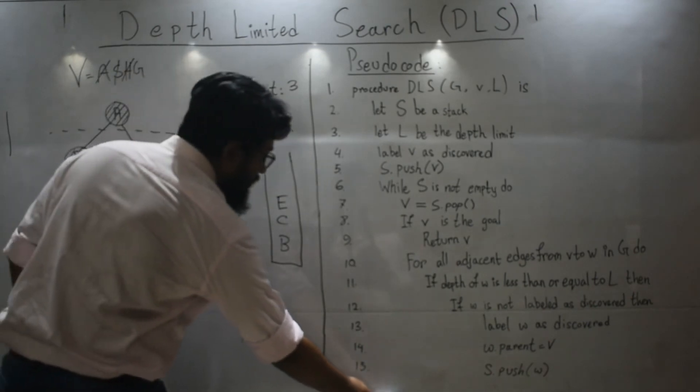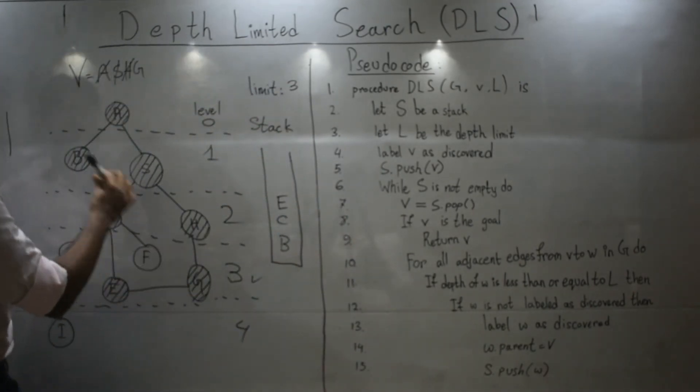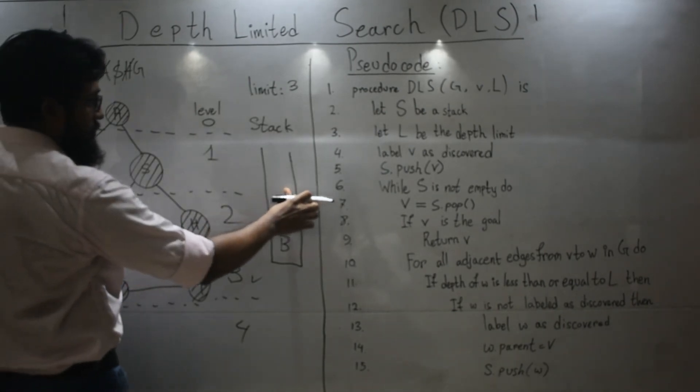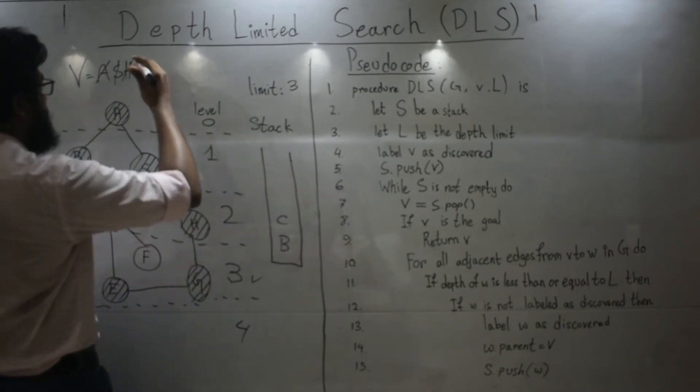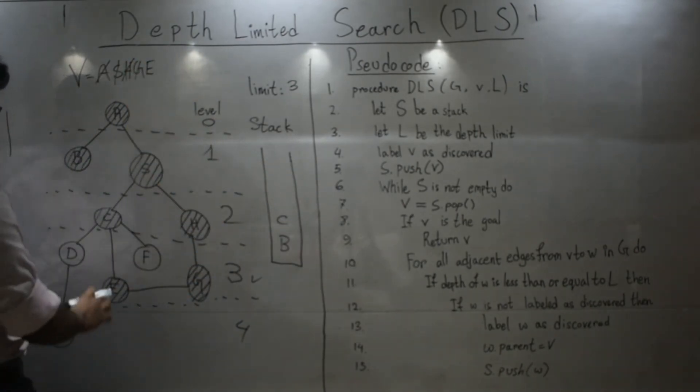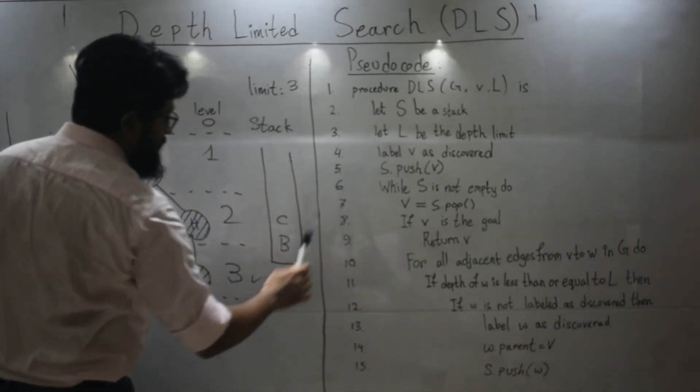And then, we will return to line 7. So now, we will pop E. Place it here. In case of E, all its neighbors have been visited. So we will skip all these and again come back to 7.